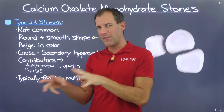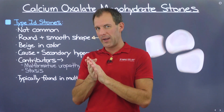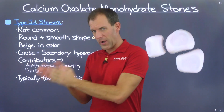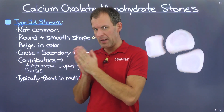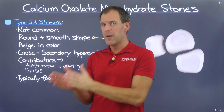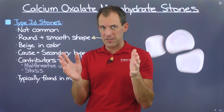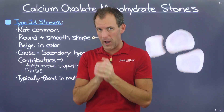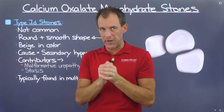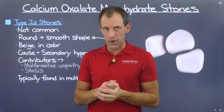You would typically know if you have some sort of malformative uropathy if you're getting this stone type, and that would cause you to have a conversation with your doctor about what could be done. If you're willing to make dietary changes, solving this stone type and all other calcium oxalate stones — with the exception of the primary hyperoxaluria-driven stone — is very easy. Stop eating oxalate and you won't get these kidney stones.